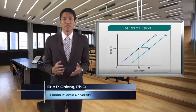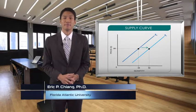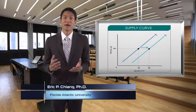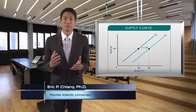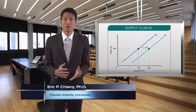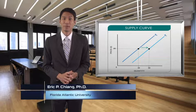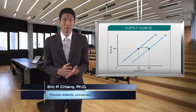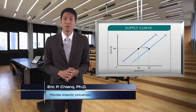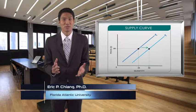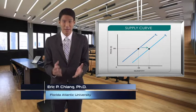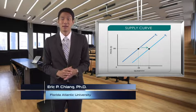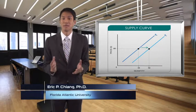Let's now turn to the supply curve. Much like demand, various factors cause the supply of a good or service to change, including changes in technology, the price of resources, production substitutes, expectations, number of sellers, and taxes and subsidies.